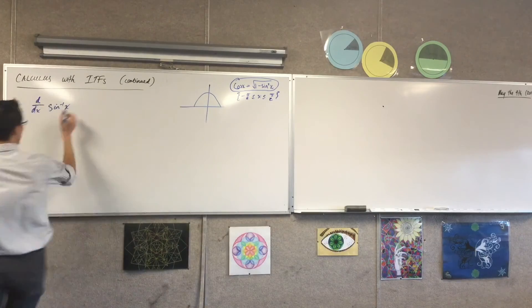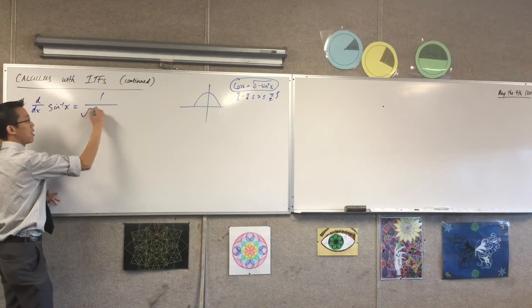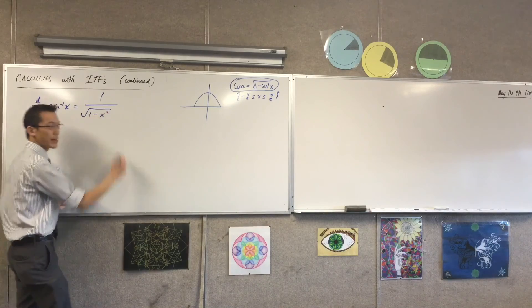What was the derivative we got out the other room? Do you remember? One on, square root of one, take away x squared. Very good.